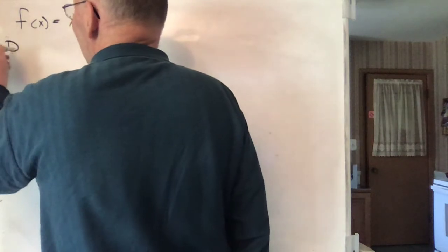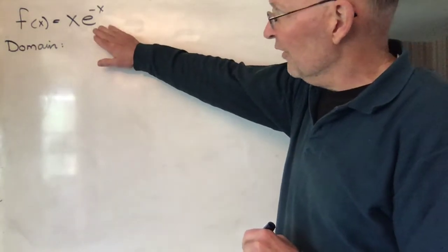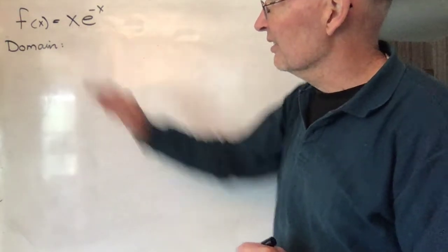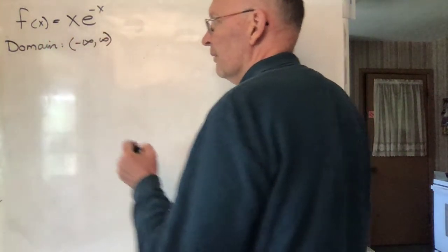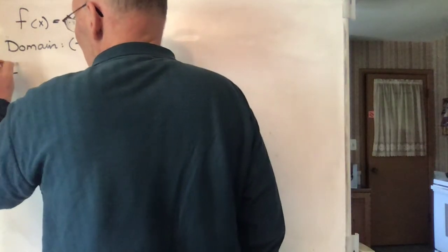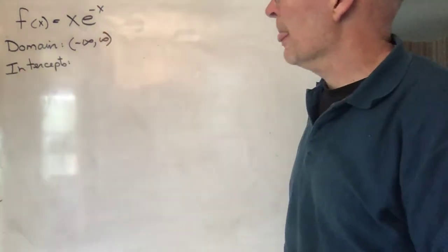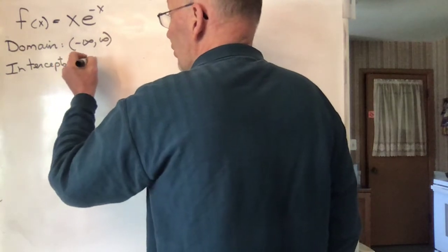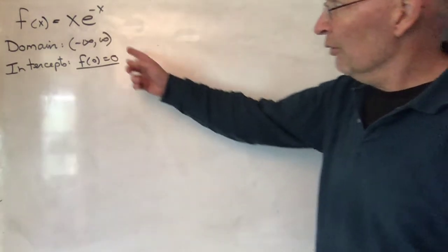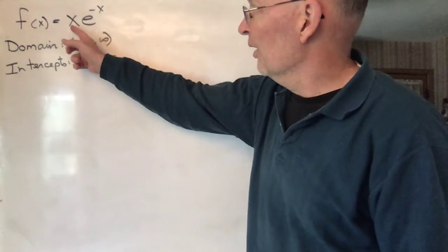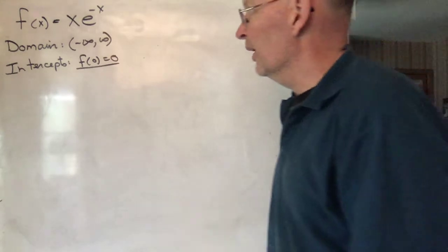Domain: the exponential function accepts everything and x accepts everything, so there are no restrictions at all. Domain is everything — the whole real line. Intercepts: f(0) = 0, which is both an x and a y intercept. There are no other x intercepts because xe^(-x) will never be zero other than at zero, and e^(-x) will never be zero. So that's the only intercept.